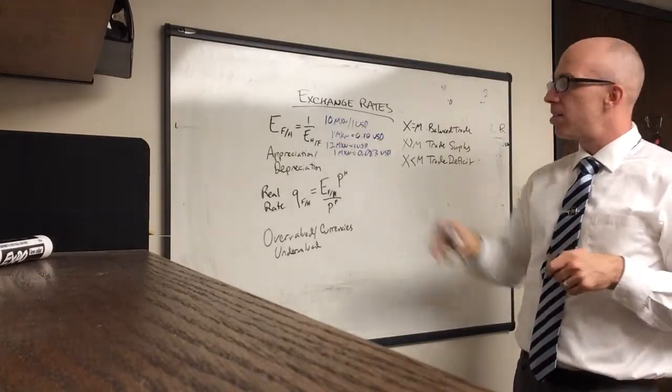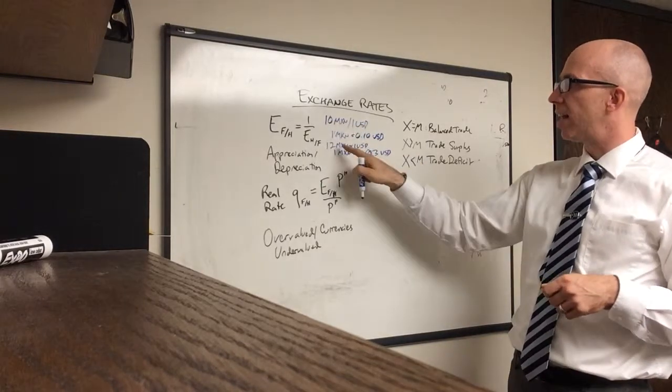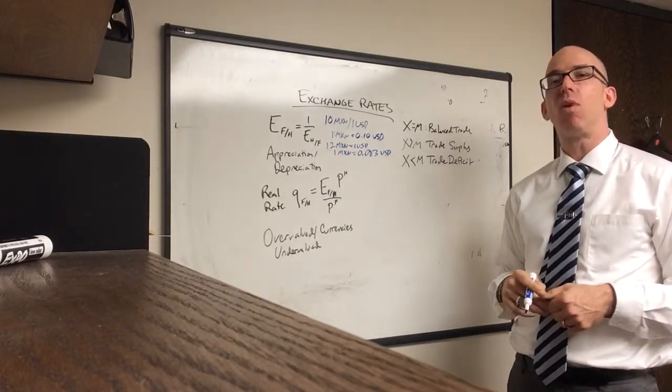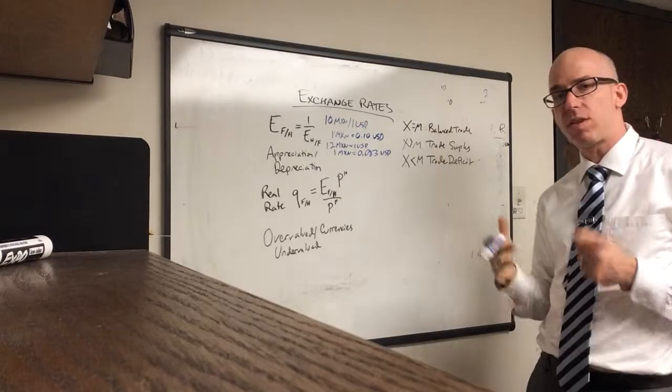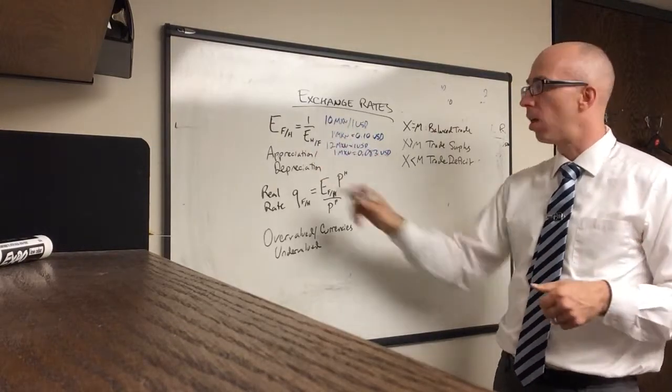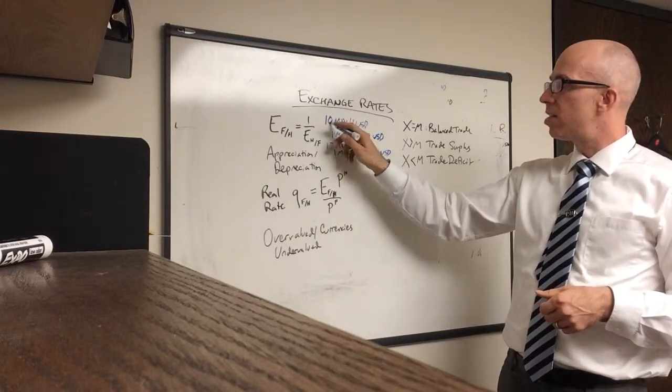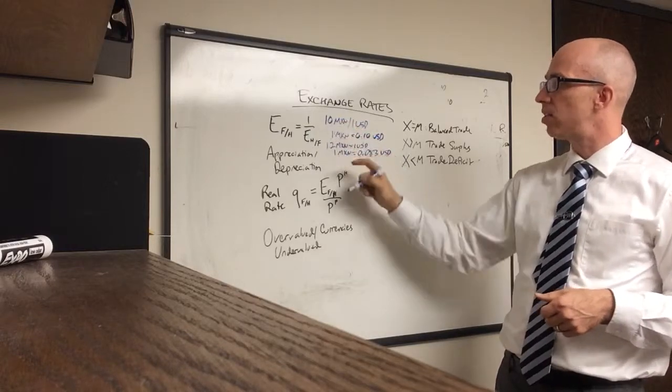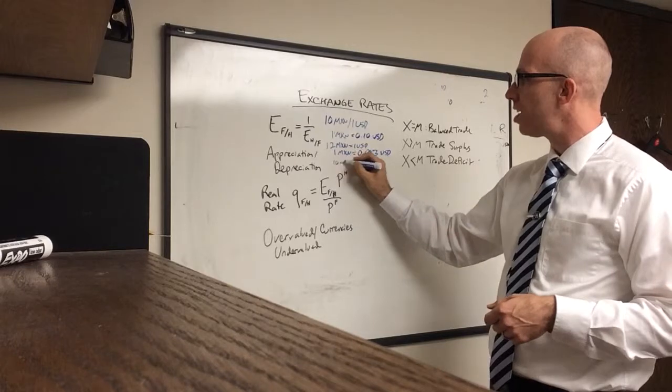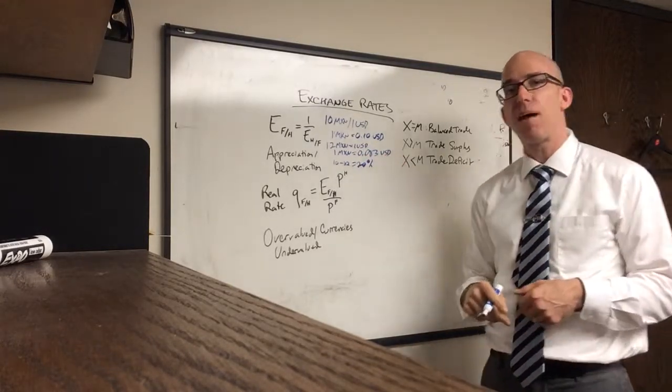Now, if you were to have a currency change from 10 pesos to $1 to 12 pesos to $1, that means that each dollar buys more pesos. So the buying power, the strength of the dollar has gone up. If you go from 10 to 12, it means $1 buys more. That is what's called an appreciation of a currency. If you look at this, this would be a 20% increase. So you can actually use the percentage change formula. From 10 to 12 is 20%, so it's a 20% appreciation.